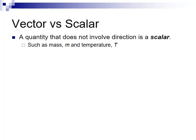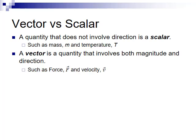A vector is a quantity that involves both magnitude and direction, such as force and velocity. A vector quantity is represented by symbols with an arrow on top of them, or sometimes with boldface letters.